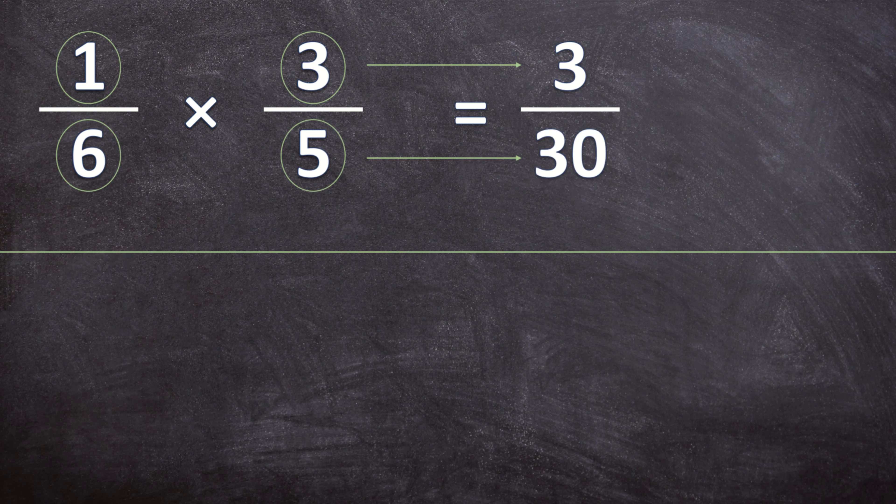But remember that this is not our final answer. We can still simplify this fraction. So what is the greatest common factor that can go into both 3 and 30. We can divide them both by 3 to get our final answer. And 3 divided by 3 is 1 over 30 divided by 3 is 10. So that is our final answer.